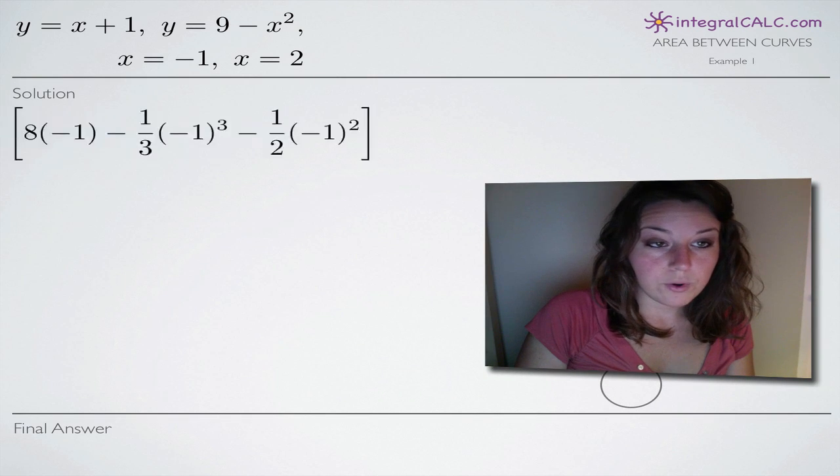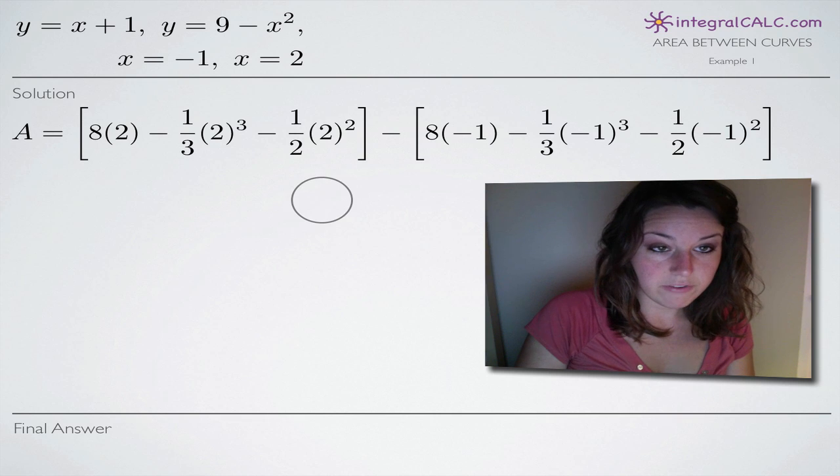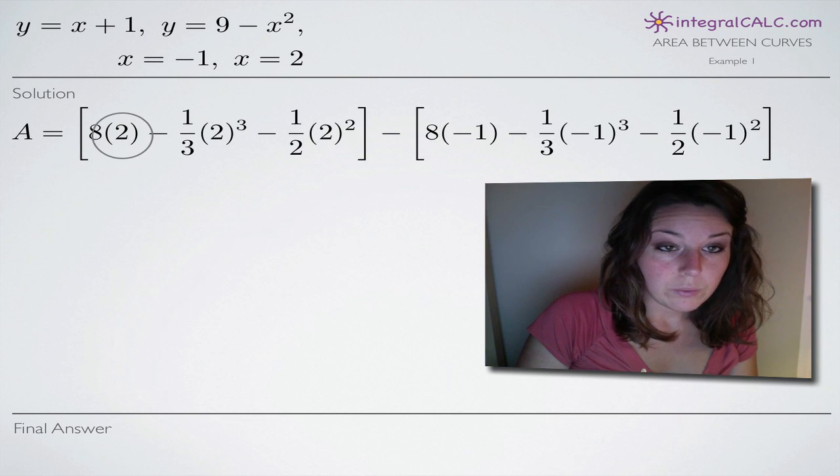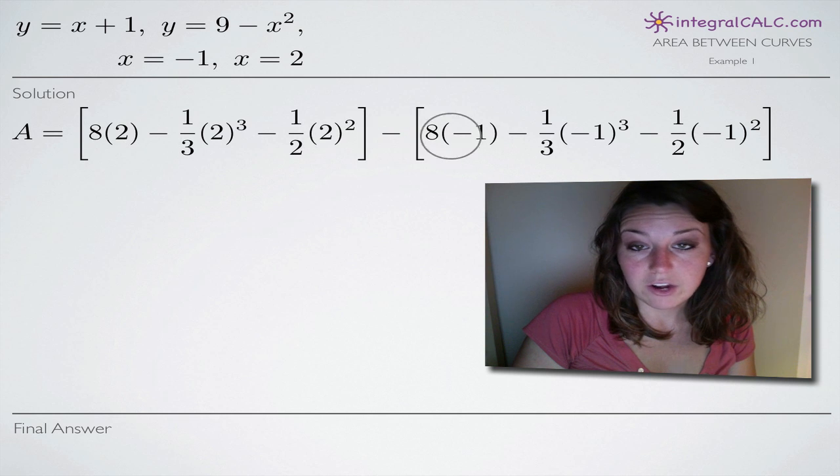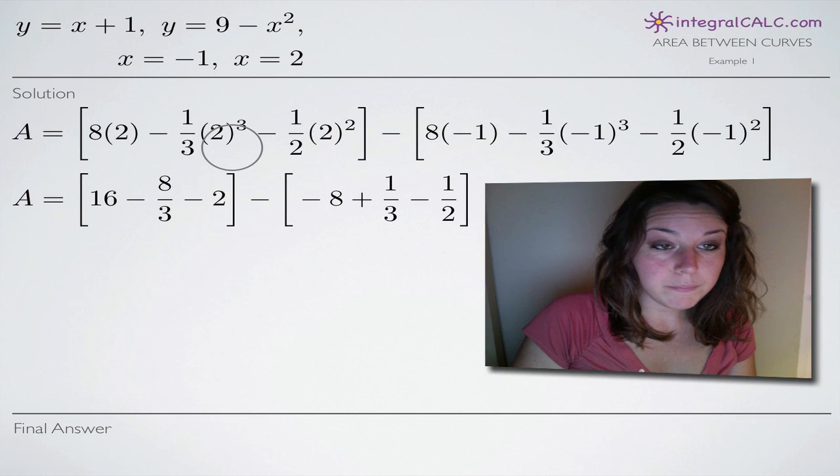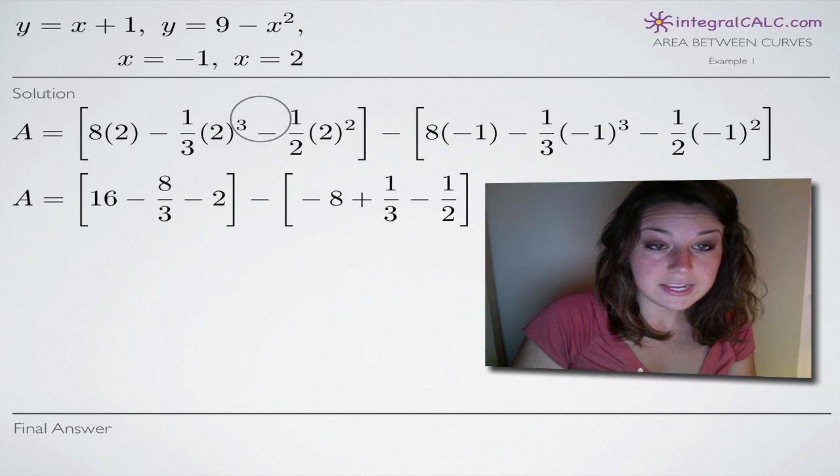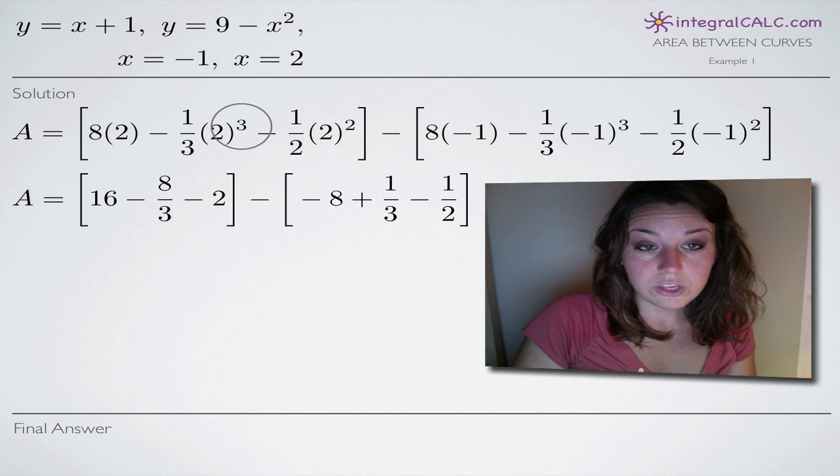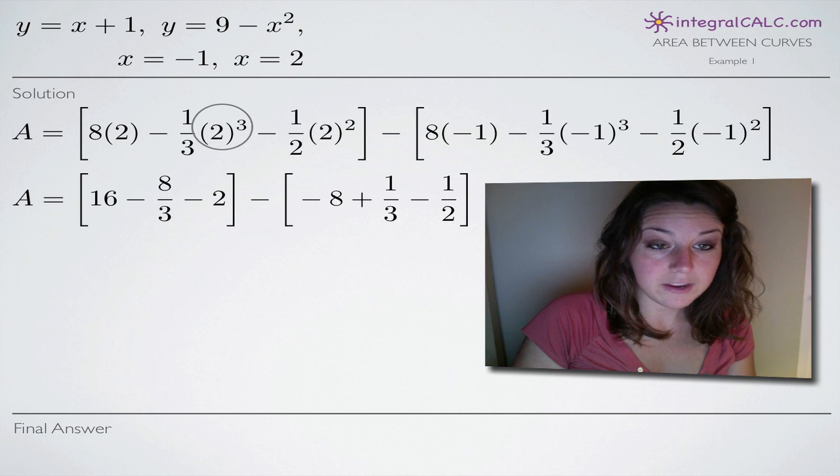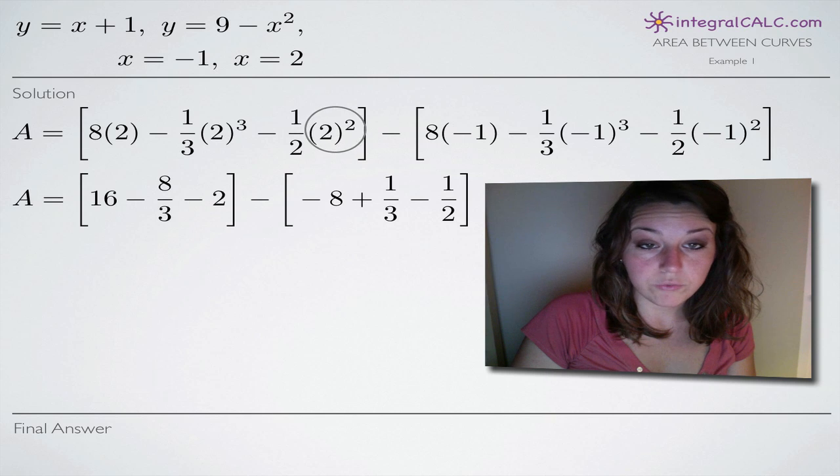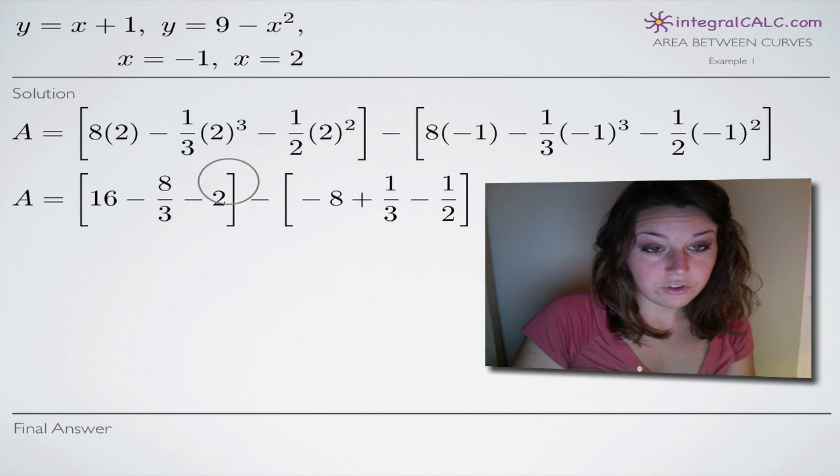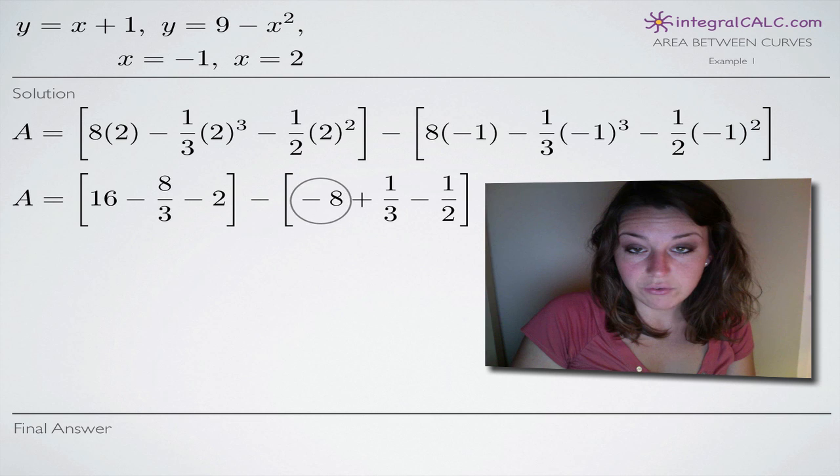So when we plug in our definite integral numbers here, we plug in 2 first because it's the top number and then we always subtract here in the center and then plug in our bottom number which is negative 1. And when we start simplifying, we'll get 16 here for the first term. 2 cubed is 8 so we end up with a negative 8 thirds here for the second term. 2 squared is 4, 4 times 1 half is 2, so we end up with a negative 2, and then of course a negative 8 here for 8 times negative 1.